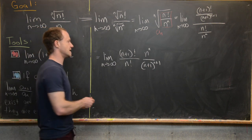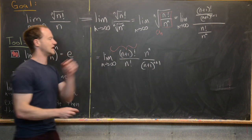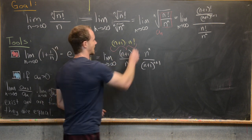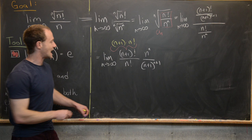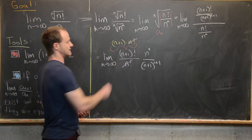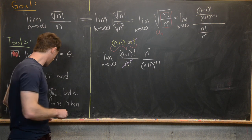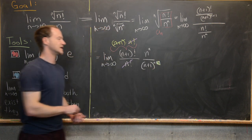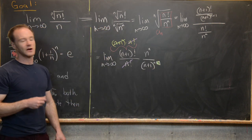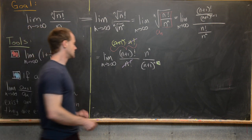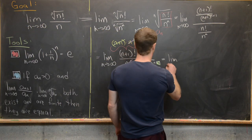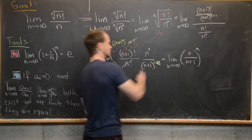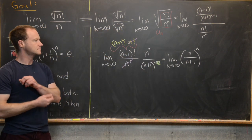Using the fact that (n+1)! equals (n+1) times n!, we can cancel n! with n!. Furthermore we can cancel the (n+1) factor with part of the denominator (n+1)^{n+1}, leaving n^n over (n+1)^n. So we now have the limit as n approaches infinity of n over n+1, all to the n.